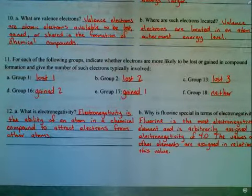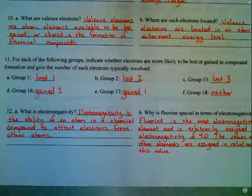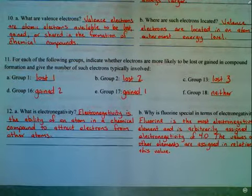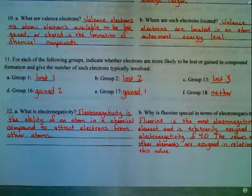Part B, Group 2. You're going to lose two electrons because you're in Group 2. You only have two valence electrons. It's easier to lose two than to gain eight to satisfy your octet.